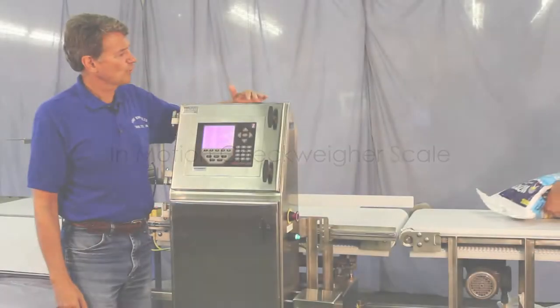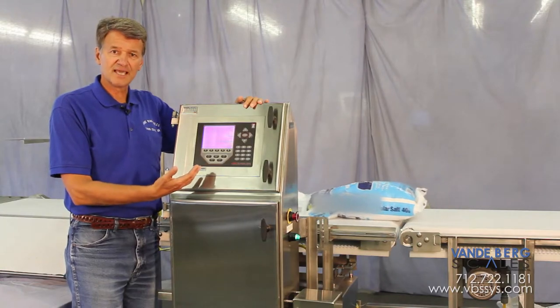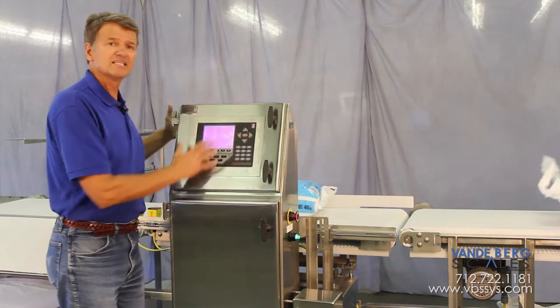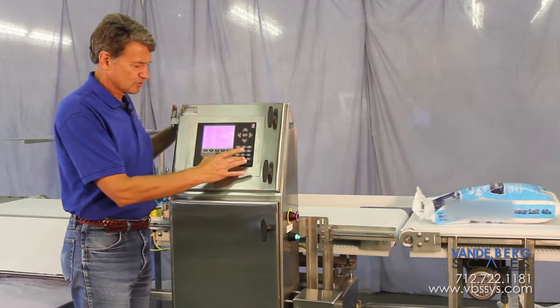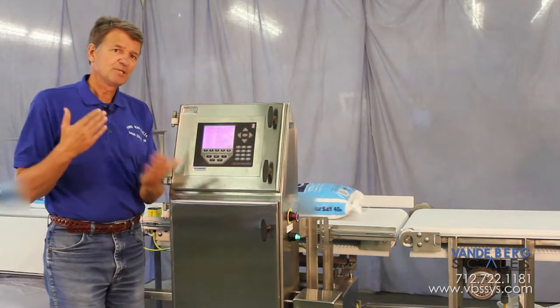The indicator controller on this Weigh More checkweigher is pre-programmed with several product IDs at a customer's request. For ease of operation, the indicator controller is interfaced with the variable frequency drive so that belt speeds are automatically adjusted when a product ID is selected.